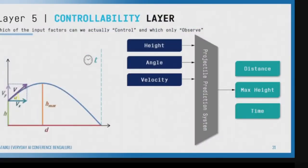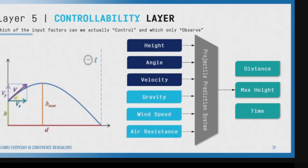Now we'll pivot into another dimension called controllability. A lot of us don't think about inputs this way. If I take the same set of inputs and color code them differently, you will see: height, angle, and velocity are controllable variables — I can change them. But gravity, wind speed, and air resistance are not in my control — I can only observe them. This ability to distinguish between two types of inputs — observable and controllable — is a very important skill.